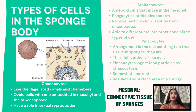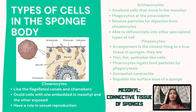The third type of cells are pinacocytes. The arrangement of these cells in the pinacoderm is the closest thing to a true tissue in sponges. They are thin, flat, epithelial-like cells that cover the exterior and some interior surfaces of the sponge. Pinacocytes ingest food particles by phagocytosis at the sponge surface. They are somewhat contractile and help to regulate the surface area of a sponge.